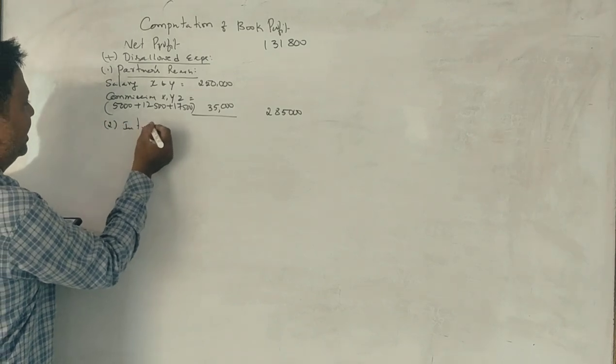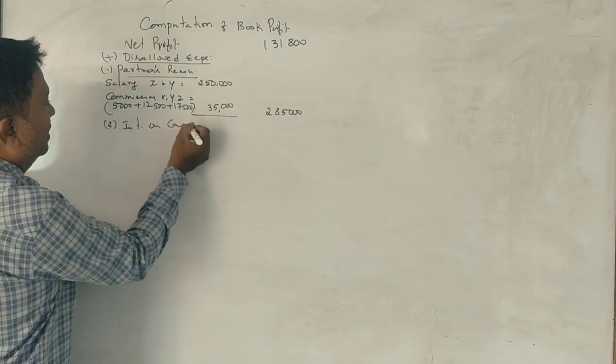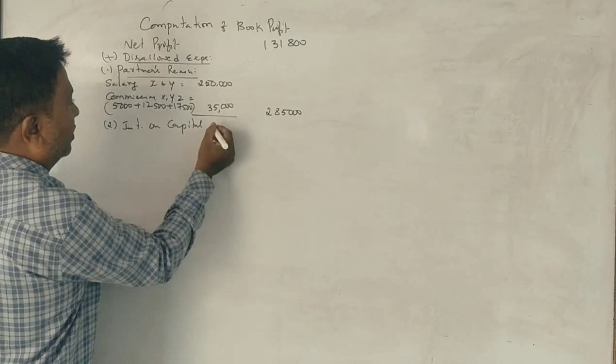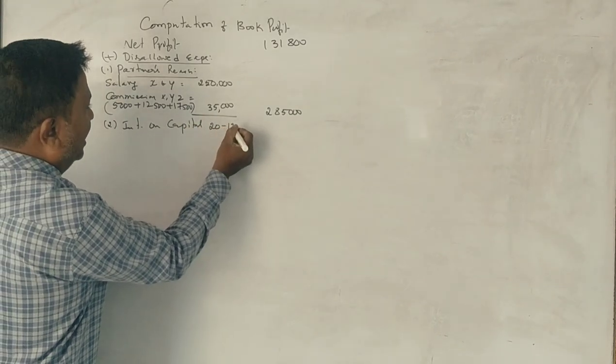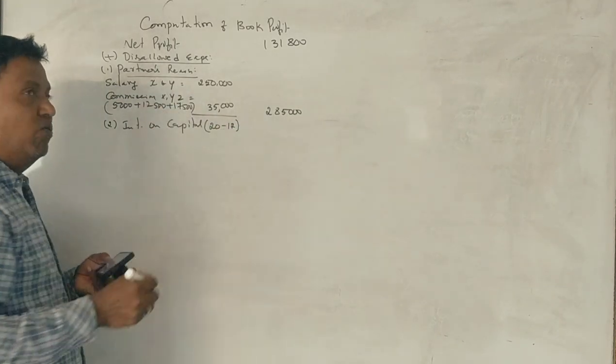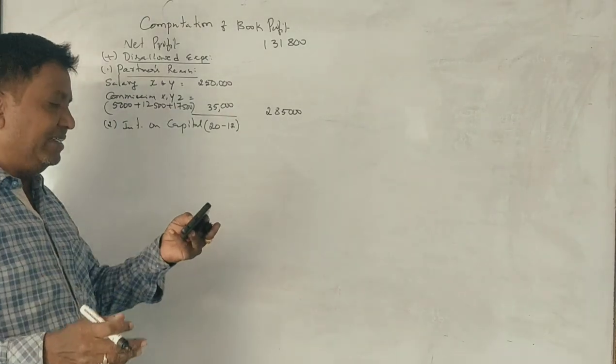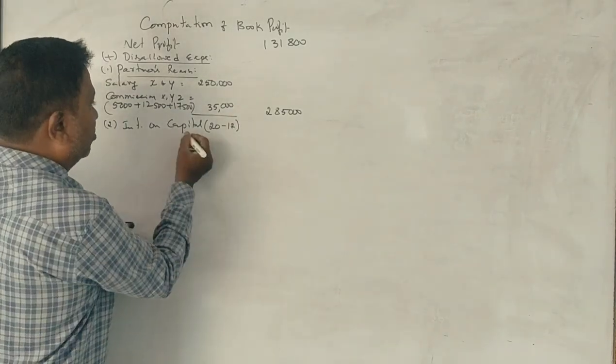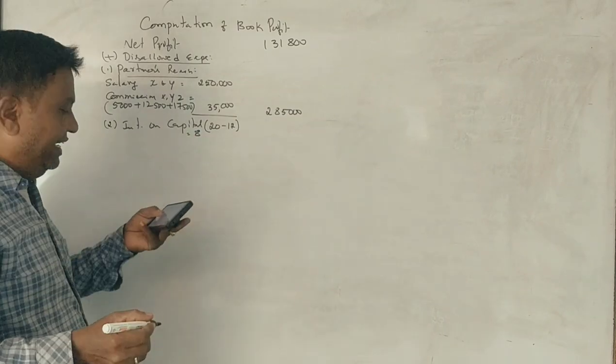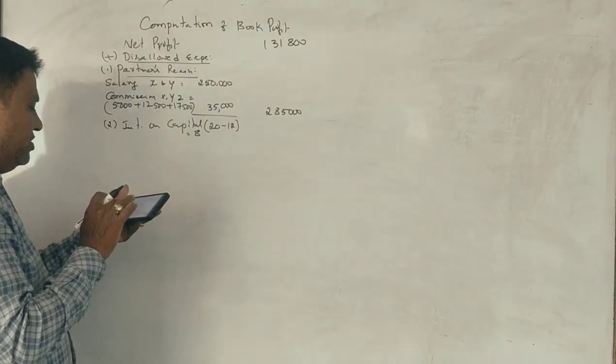Interest on capital. Interest on capital - 20% is allowed, 12% is allowed as business expenses. 8% is disallowed. Total interest on capital.